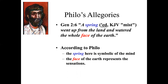For example, in Genesis 2:6, it says that a spring went up from the land and watered the whole face of the earth. According to Philo, the spring is symbolic of the mind, and the face of the earth is symbolic of the sensations. So what this text is really teaching is that the mind covers the sensations — which is directly derived from Neoplatonic philosophy. To us it looks like Philo is doing eisegesis, reading his Neoplatonic philosophy into the text, but that's how he interpreted the text in order to find his Neoplatonic philosophy.